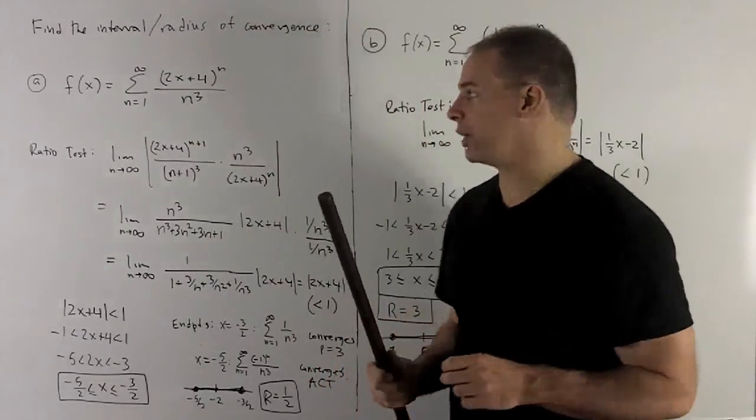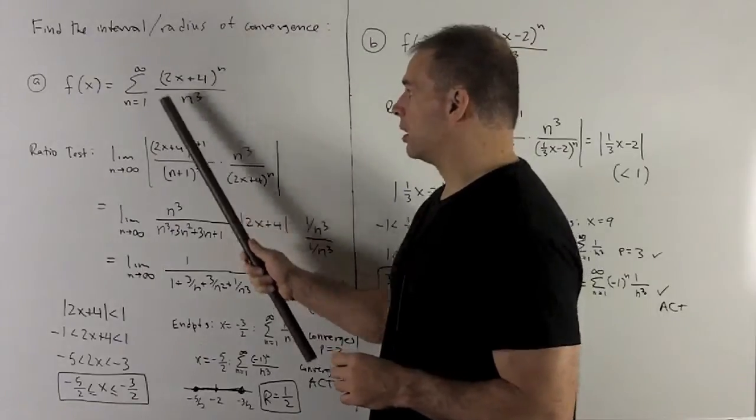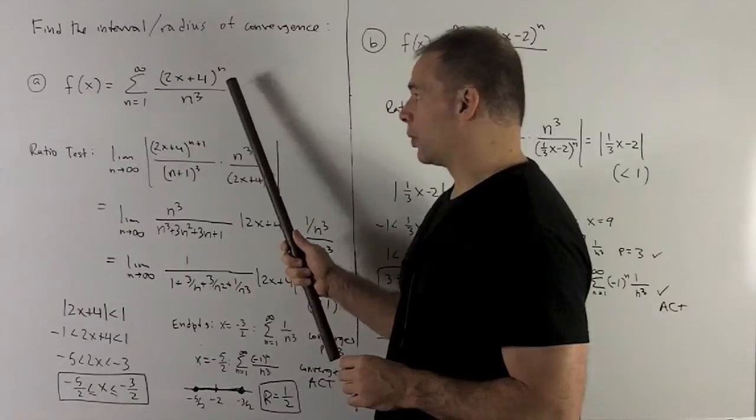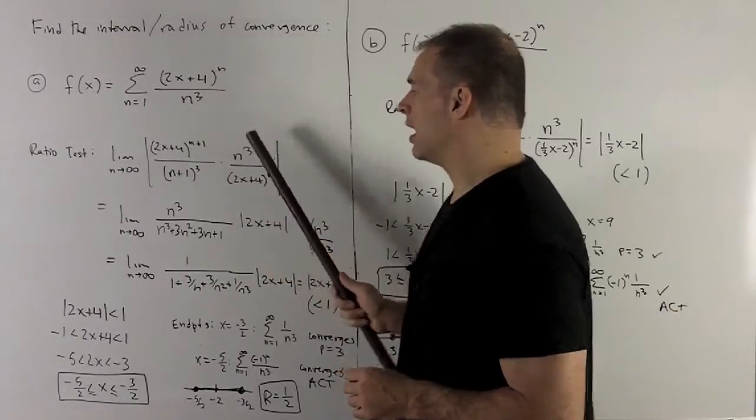So we're going to proceed with the ratio test. I'm going to take our sequence, wherever I have an n, I put an n plus 1. And then we're going to take the term with just n and flip it over.